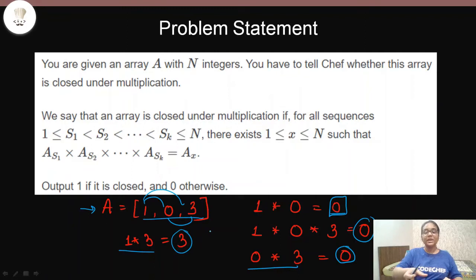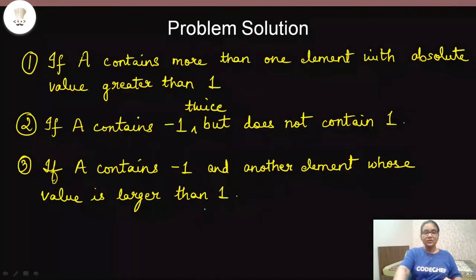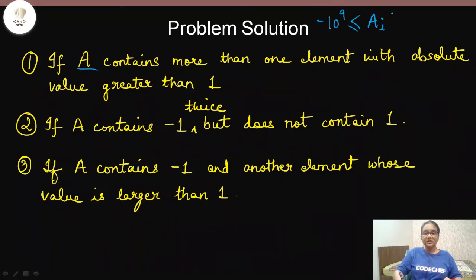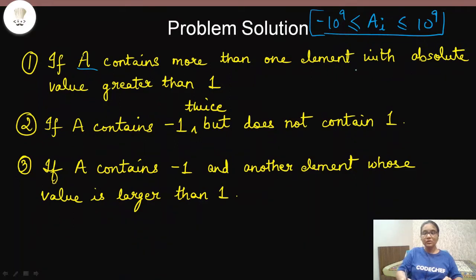Now let's see what elements, if present in the array, will prevent it from being closed under multiplication. The first condition is: if the array contains more than one element with absolute value greater than one. Note that array elements can have values greater than -10^9 and less than 10^9, so the array can have negative values as well, as given in the constraint section.